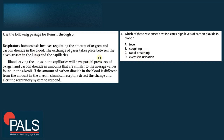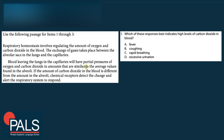Question 1: Which of these responses best indicates high levels of carbon dioxide in the blood? A) fever, B) coughing, C) rapid breathing, D) excessive urination. The text tells us that if carbon dioxide is too high, the respiratory system responds. To get rid of excess carbon dioxide, the body would breathe more quickly. 'Rapid' is a synonym for fast or quickly, so the correct answer is C — rapid breathing.